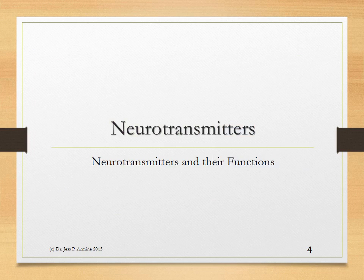Neurotransmitters are those chemicals that facilitate the transfer of information throughout the entire body via the nervous system. Neurotransmitters are divided into excitatory and inhibitory neurotransmitters. Excitatory neurotransmitters are those chemicals that wake you up, allow you to focus, give you energy, and allow you to function throughout the day. Inhibitory neurotransmitters are those chemicals that help you calm down, relax, and sleep.